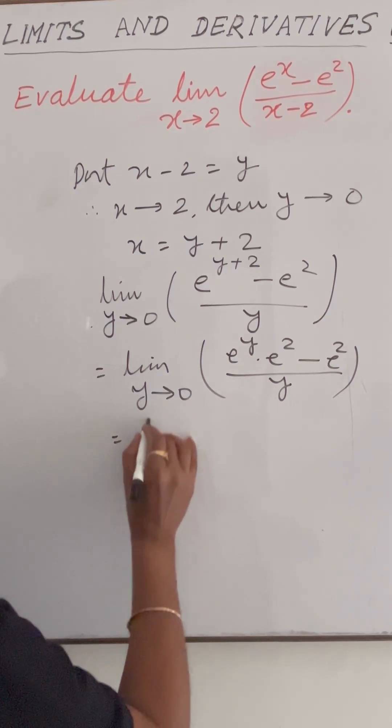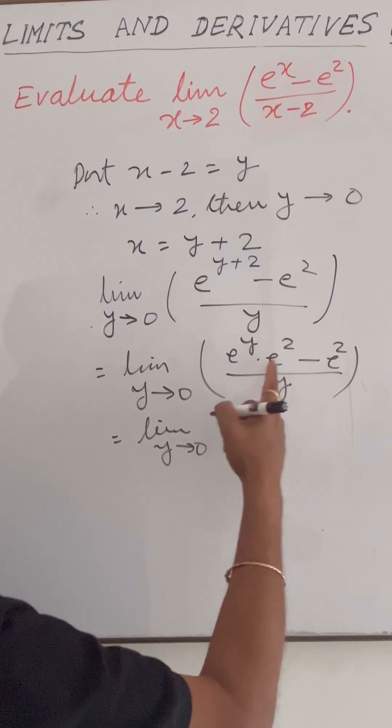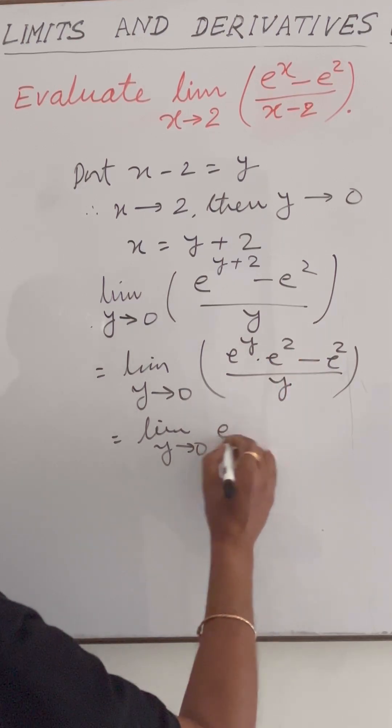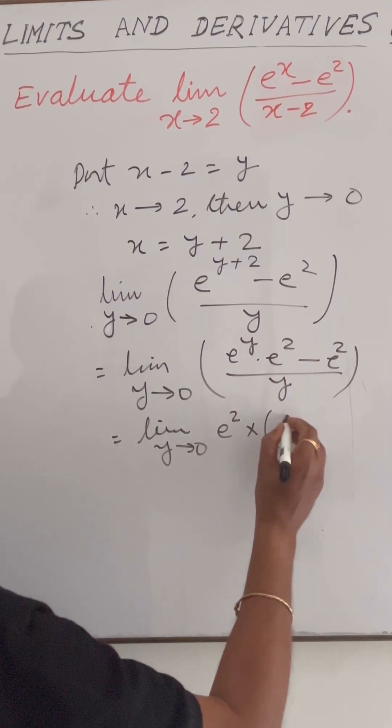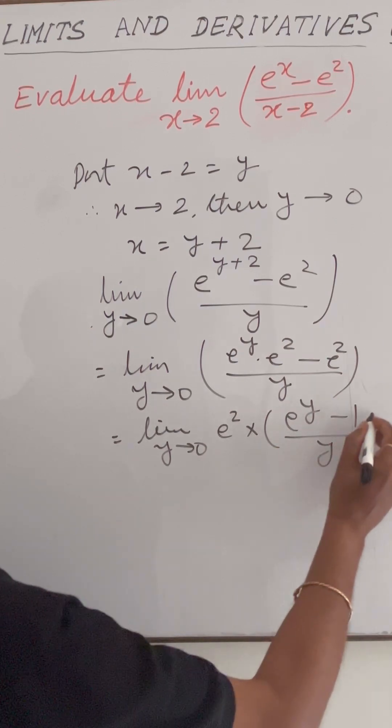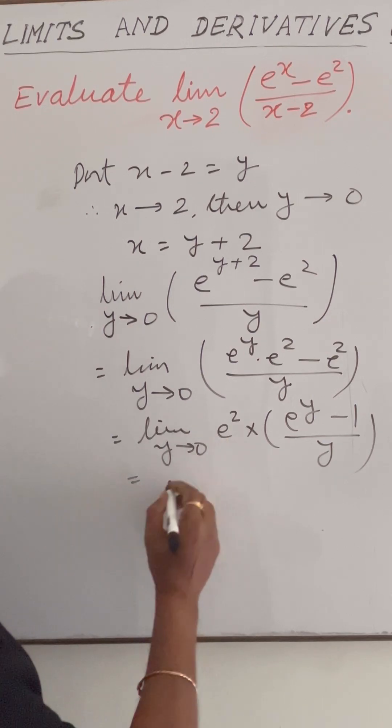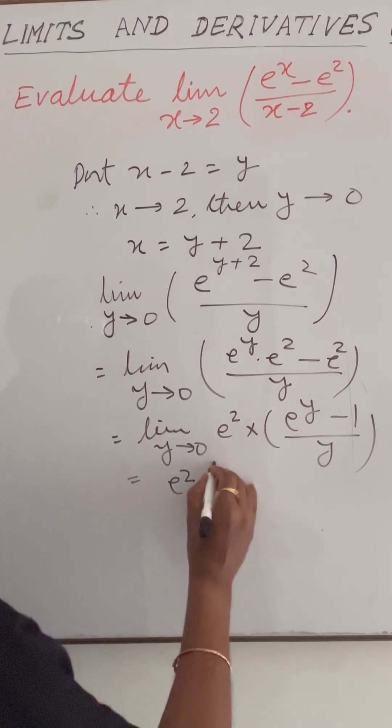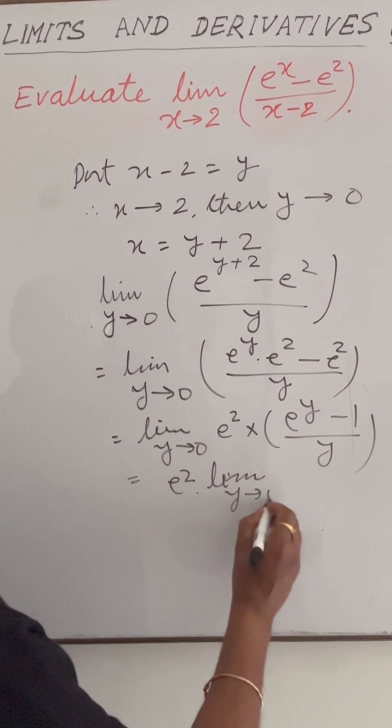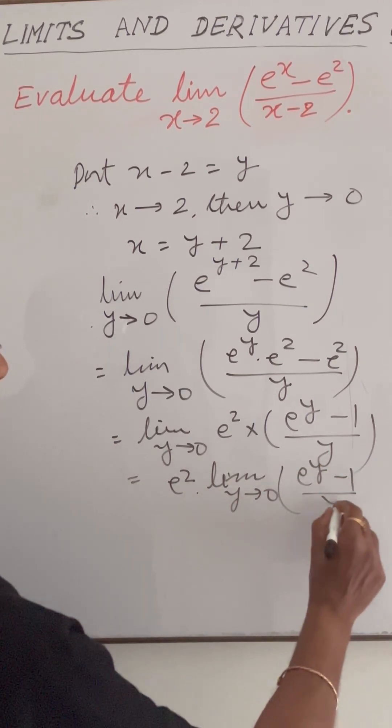This is equal to limit y tends to 0 of e squared times e to the power y minus 1 upon y. e squared is constant here, so e squared into limit of y tends to 0, e to the power y minus 1 upon y.